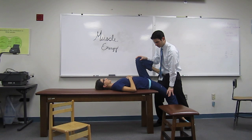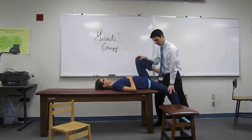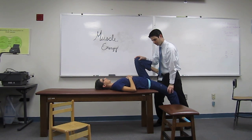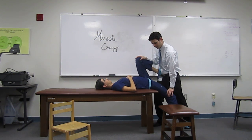We'll begin by placing the leg into a barrier and have the patient gently provide an isometric force upward against the physician's resistance. After three to five seconds, the physician will then re-engage the barrier by pressing farther into hip extension.